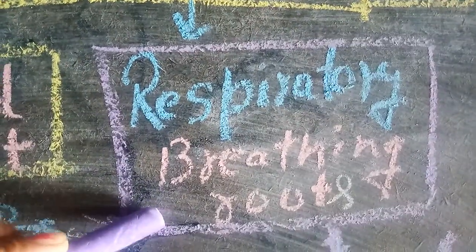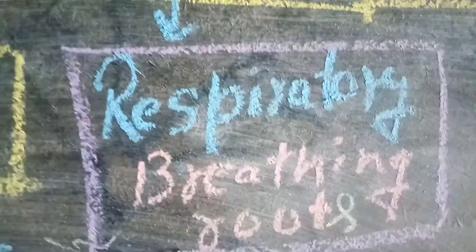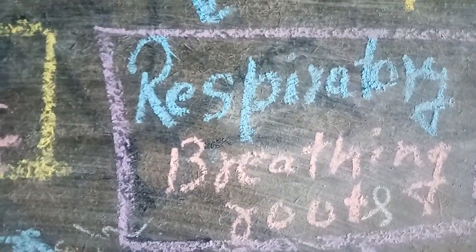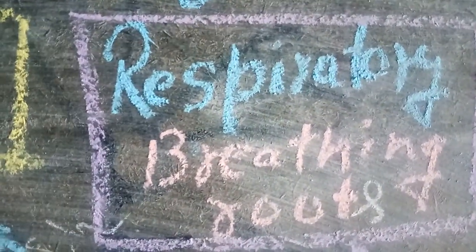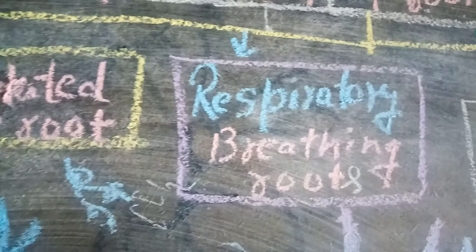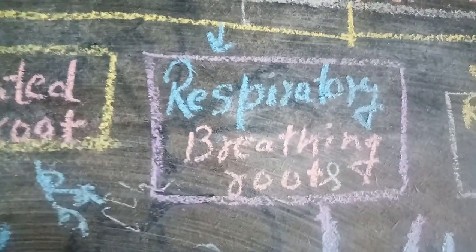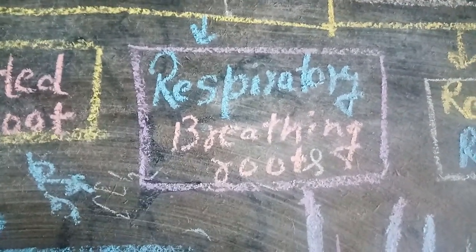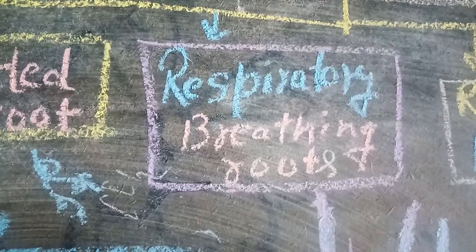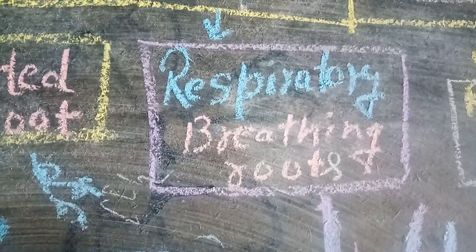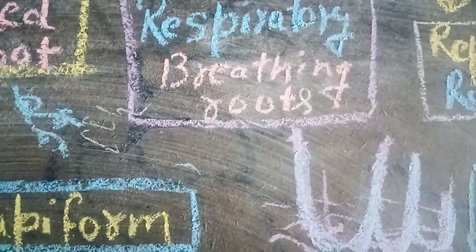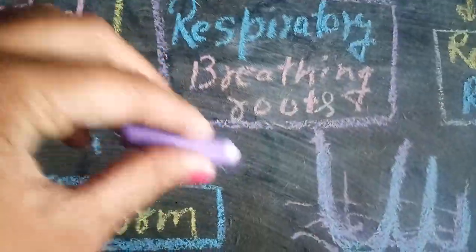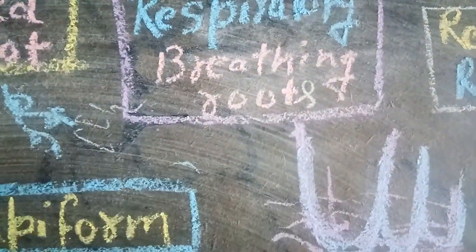Respiratory or breathing roots: they are present in mangrove varieties, found in shallow water. These plants are commonly found in Sundarbans, Andaman Islands, and Nicobar Islands. The primary roots grow in a horizontal section.